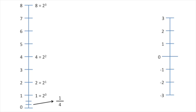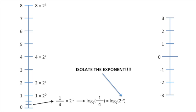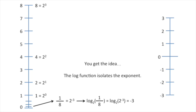Now we've got 1/4 on our number line. 1/4 can be rewritten as 2 to the negative 2. So the log base 2 of 1/4 equals the log base 2 of 2 to the negative 2. Isolate the exponent — negative 2 is the log base 2 equivalent of 1/4. The log function just isolates the exponent. So for 1/8, we can rewrite that as 2 to the negative 3, which equals the exponent negative 3, and negative 3 is the equivalent on the log 2 scale of 1/8.